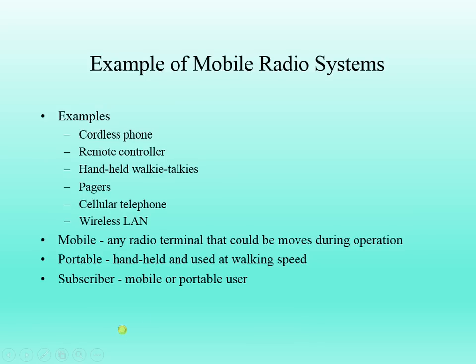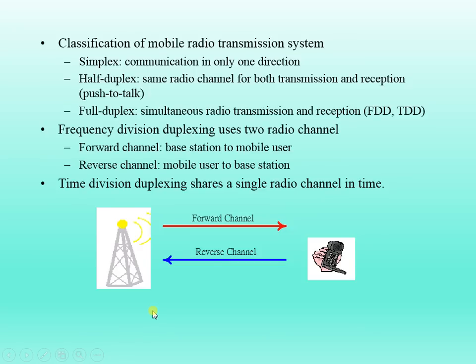Now we'll see the classification of mobile radio transmission systems. There are basically three types: simplex, half duplex, and full duplex. Simplex is communication in only one direction. For example, radio and TV are simplex — the signal goes from the sender to the receiver only and cannot go back from receiver to sender.